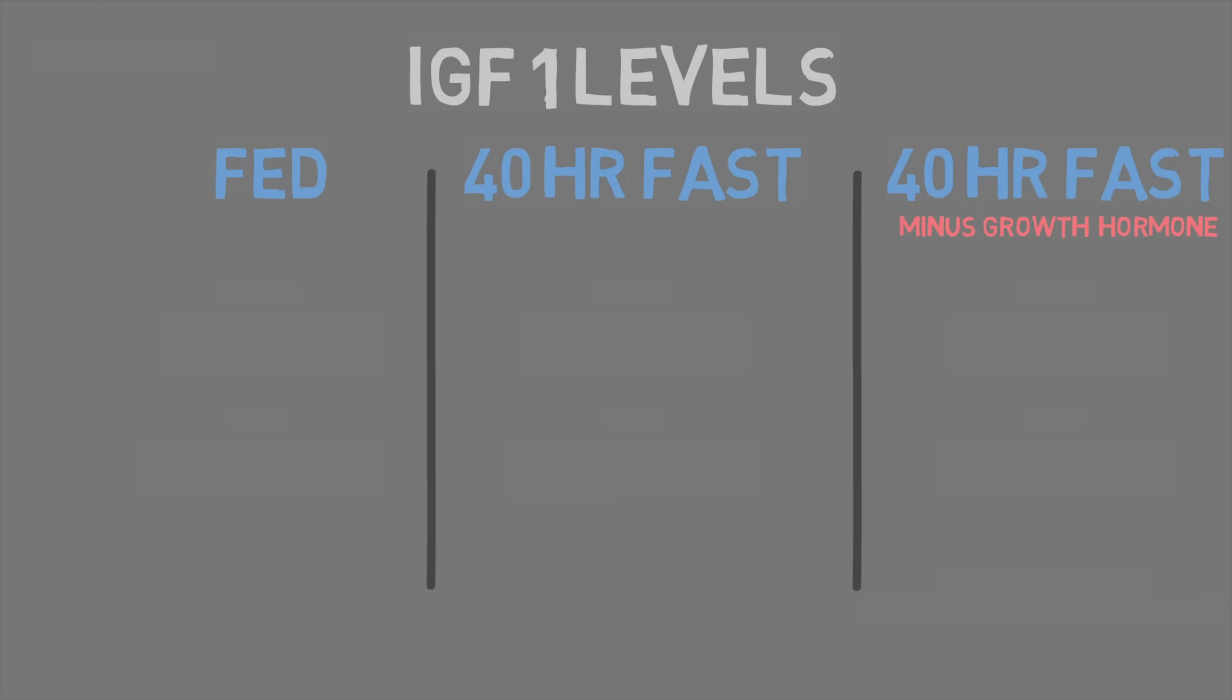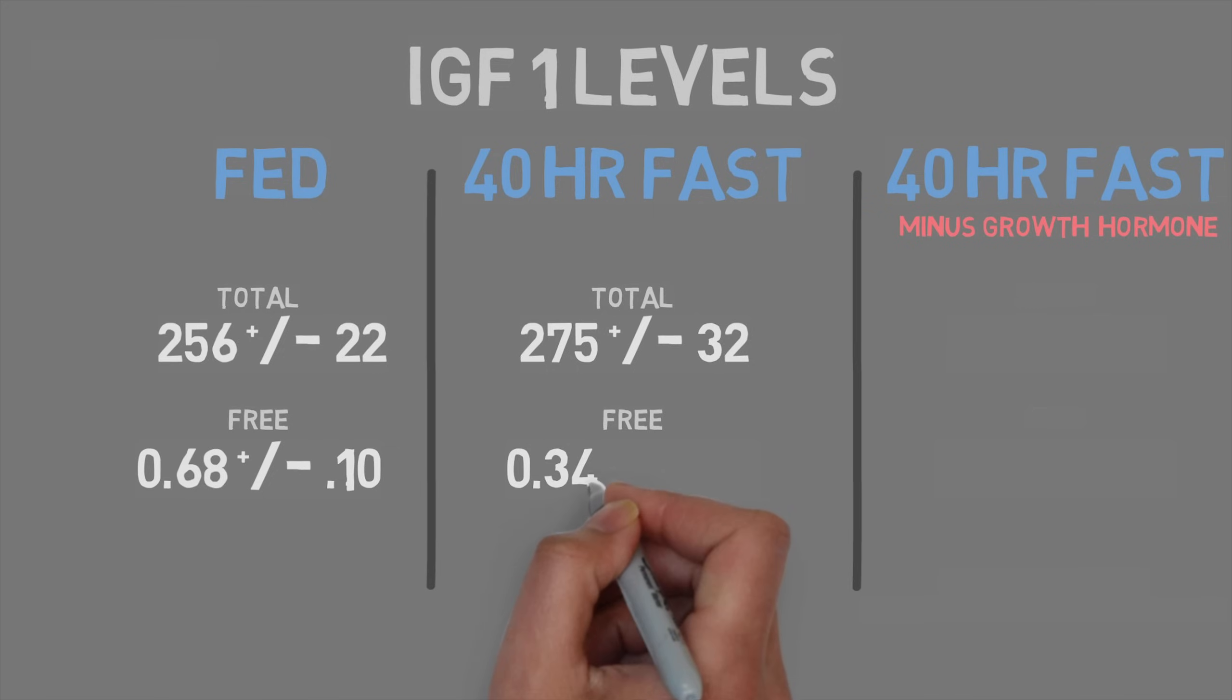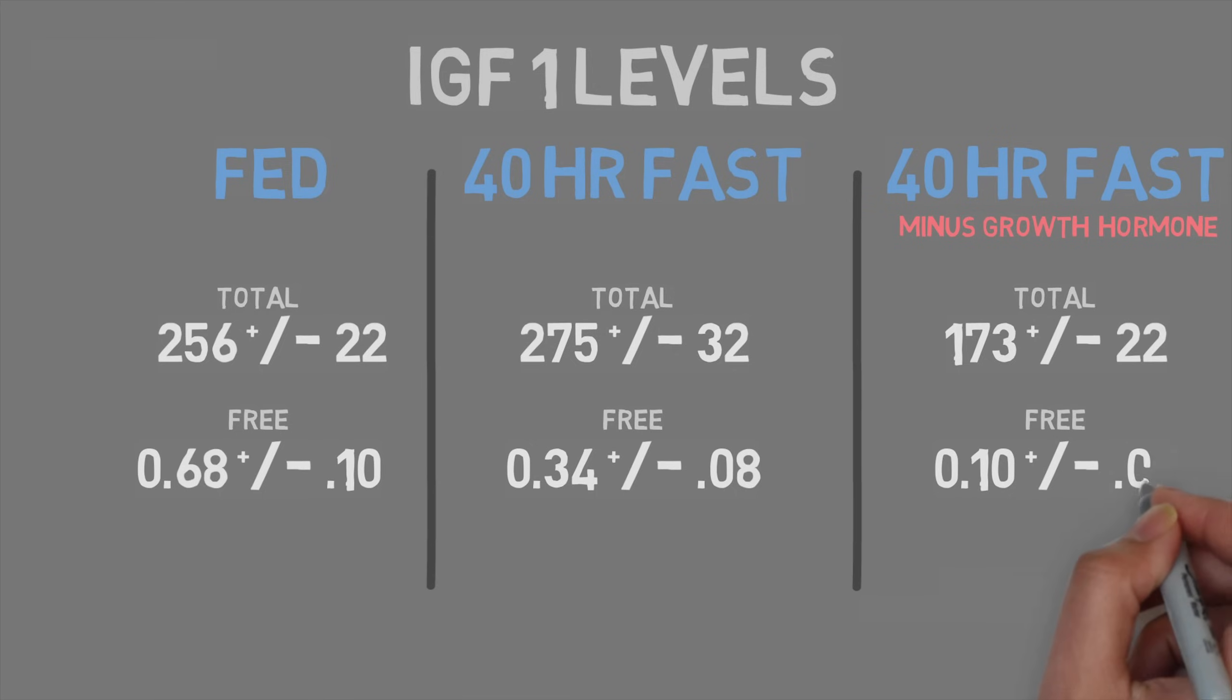First, they measured the baseline well-fed levels of IGF-1. Then, the subjects did a 40-hour fast. And while the levels changed, it wasn't very significant. But in the group whose growth hormone levels were prevented from going through the natural fasting increase, their levels of free and total IGF-1 were 35% and 70% lower. And just to tie everything together, the researchers also measured for muscle protein breakdown. When the subjects fasted and had their growth hormone spike suppressed, there was a 50% increase in the markers of muscle breakdown versus the fasting group who had the natural growth hormone spike.